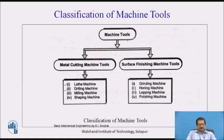Under metal cutting machine tools, the first one is the lathe machine, in which the job is held in the spindle or chuck and material can be removed parallel to the axis and perpendicular to the axis. Removing material parallel to the axis is cylindrical turning, which generates different sizes of shafts, whereas removing material perpendicular to the axis generates flat surfaces.